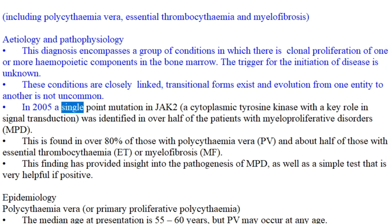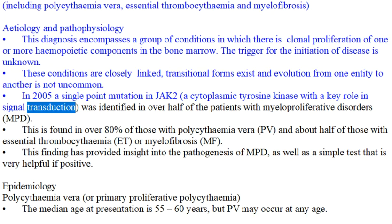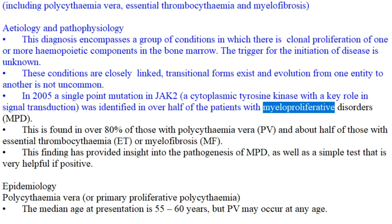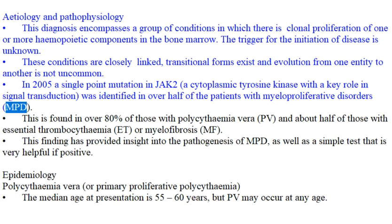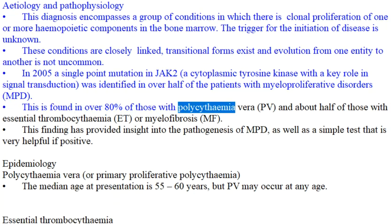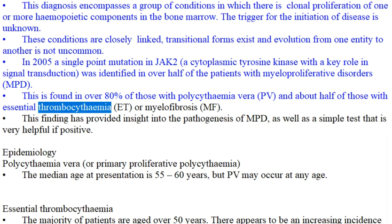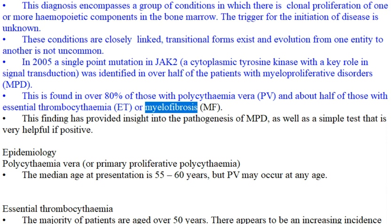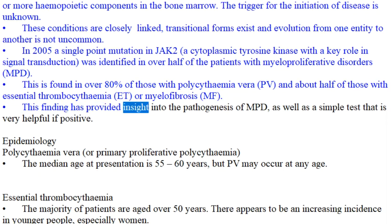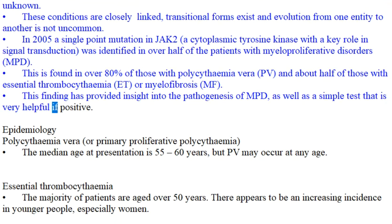In 2005, a single-point mutation in JAK2, a cytoplasmic tyrosine kinase with a key role in signal transduction, was identified in over half of the patients with myeloproliferative disorders (MPD). This is found in over 80% of those with polycythemia vera (PV), and about half of those with essential thrombocythemia (ET) or myelofibrosis (MF). This finding has provided insight into the pathogenesis of MPD, as well as a simple test that is very helpful if positive.